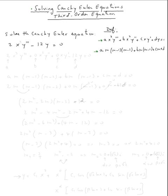So let's do this example. Let's solve this Cauchy-Euler equation: 2x³y''' - 12y = 0. So first let's rewrite it in that form. This is supposed to be 2x³ third derivative of y.